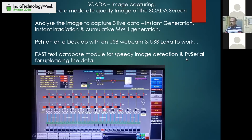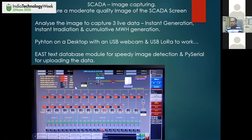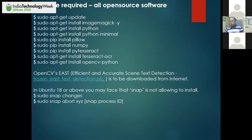PySerial was used for converting the data into a serial terminal and thereby uploading the data to the remote receiver situated at the power plant end, which would carry that information across the 4,550 meter aerial distance. These are all open source software. I had to do all these things on a Linux terminal, but this can also be done on a Windows terminal. You have to install Python, Python-minimal, Pillow, and NumPy.